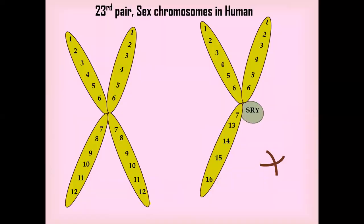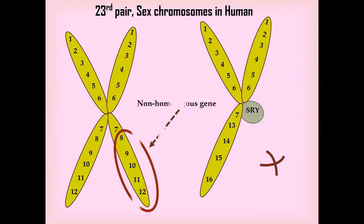We are going to study the 23rd pair of chromosomes — these are called sex chromosomes. These sex chromosomes are two X-like structures present in females, while in males there is one X and one Y-like structure. The genes present on the X chromosome that are not present on the Y chromosome are called non-homologous genes, and they express X-linked characters.